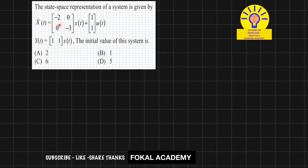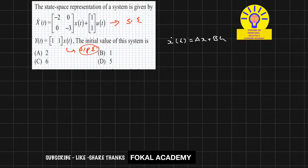In this problem, a state space equation is given. We know the state equation and the output equation. In standard form, the state equation is x-dot of t equal to Ax plus Bu, and the output equation is Cx plus Du. Here, A is called the state matrix, B is called the input matrix, C is called the output matrix, and D is called the transmission matrix.